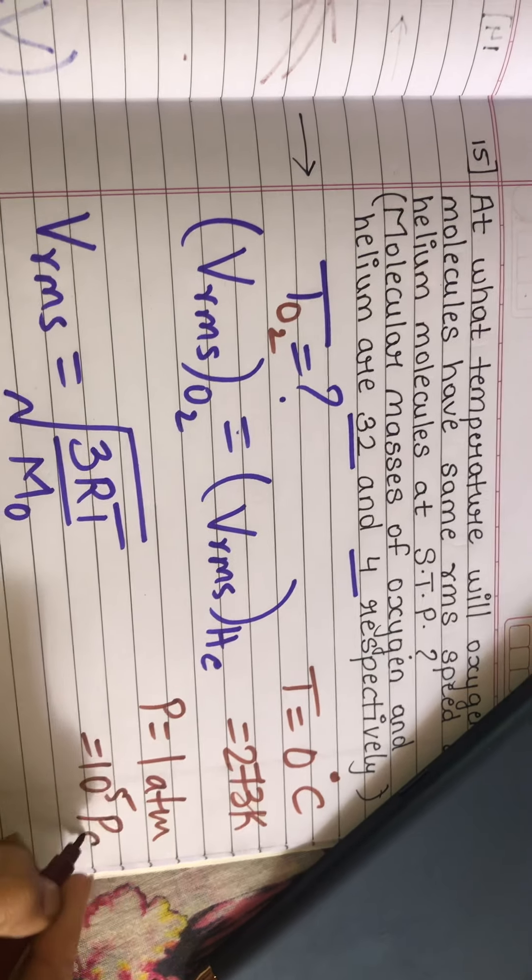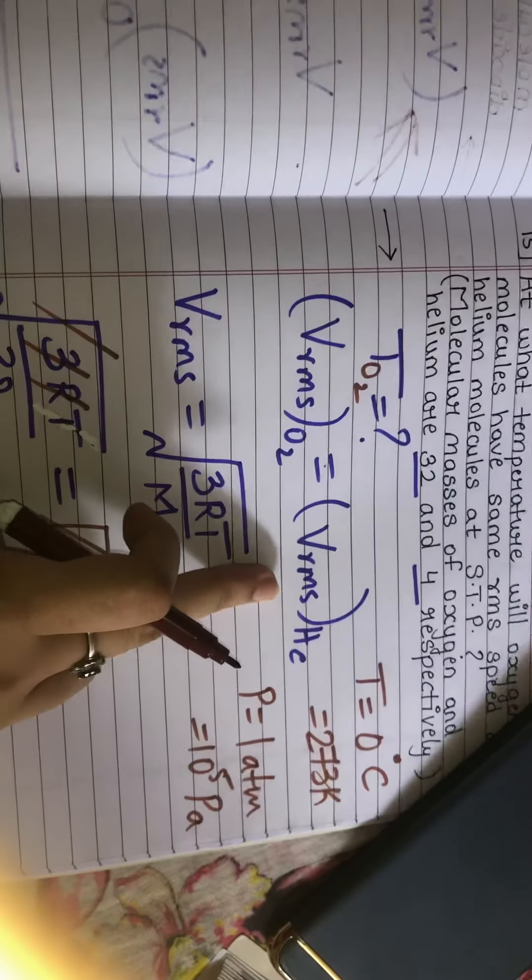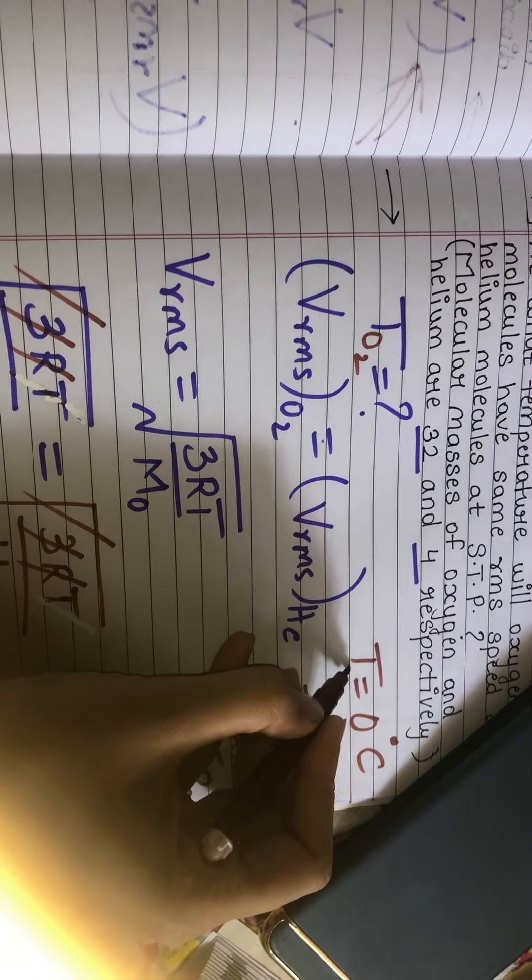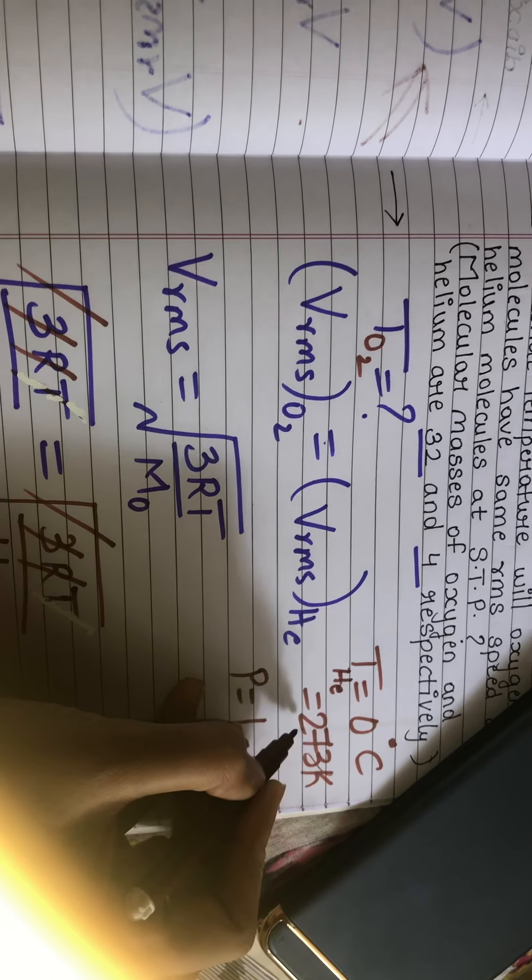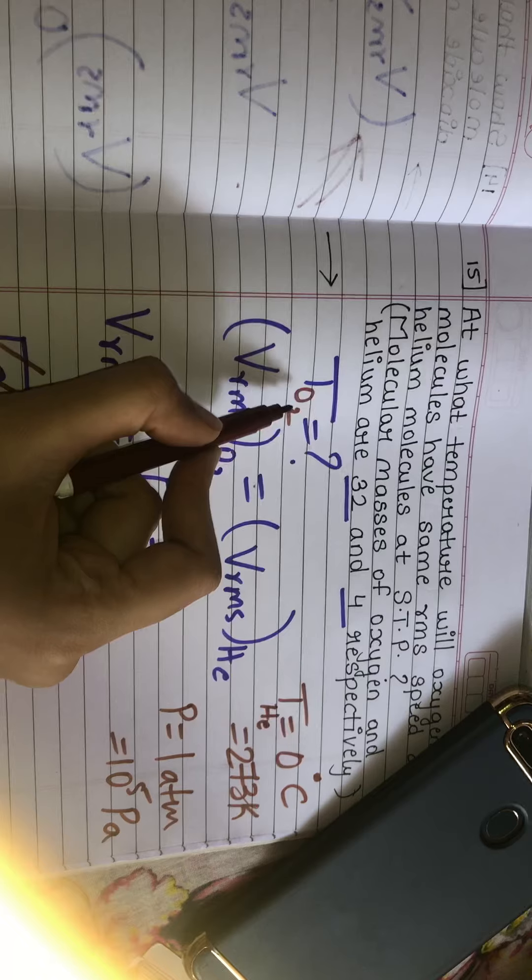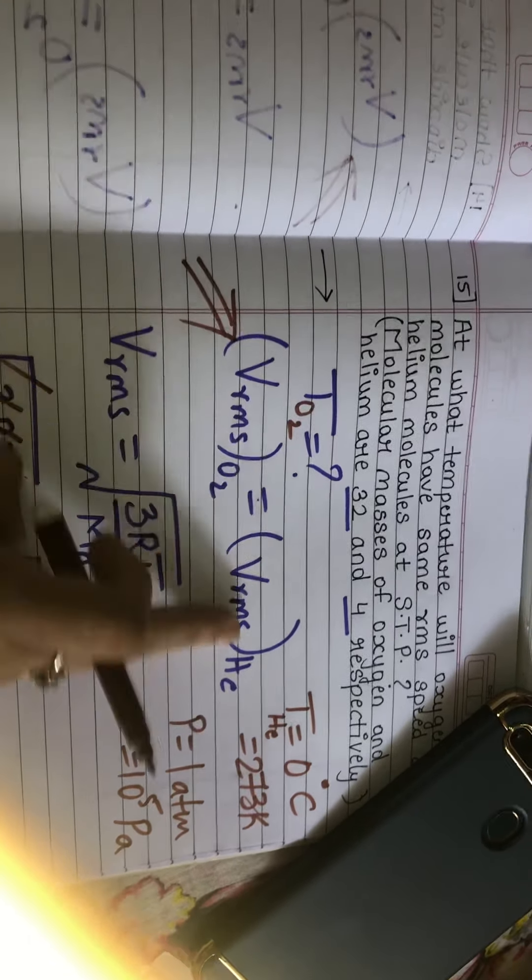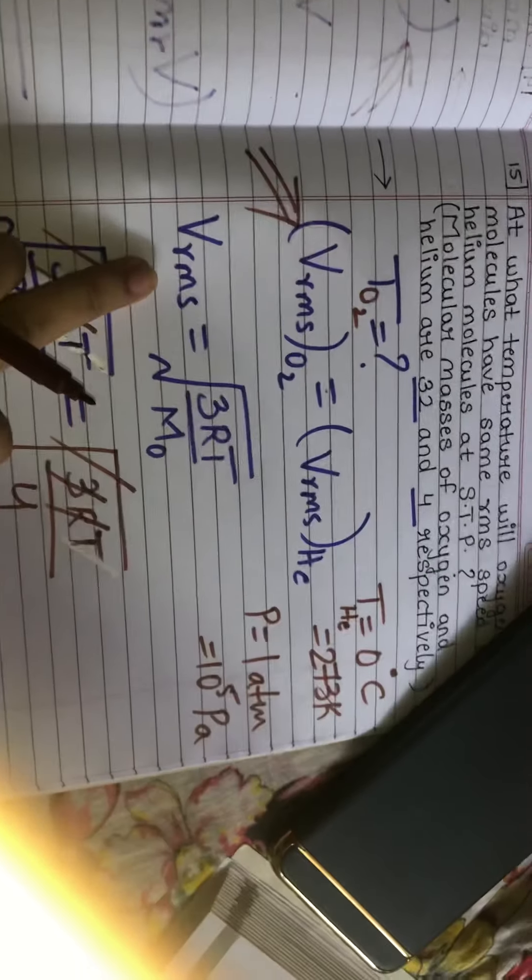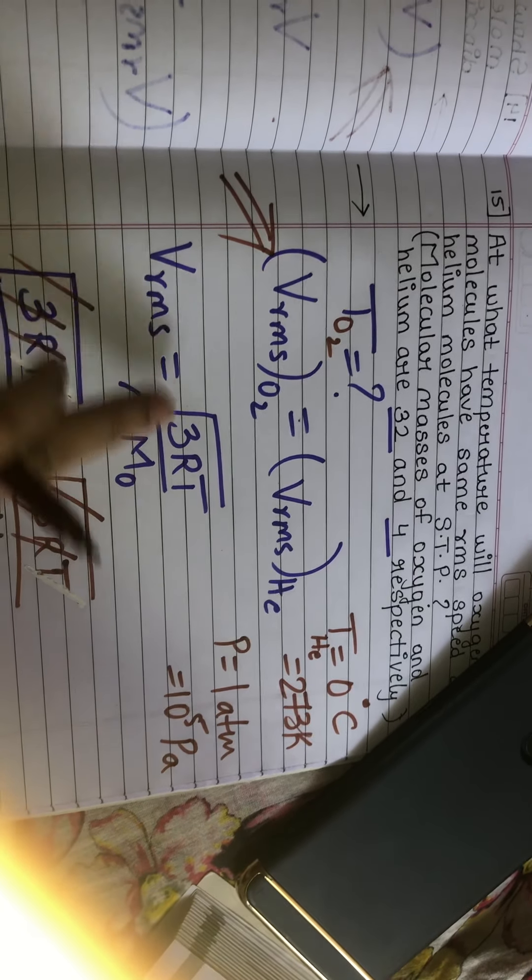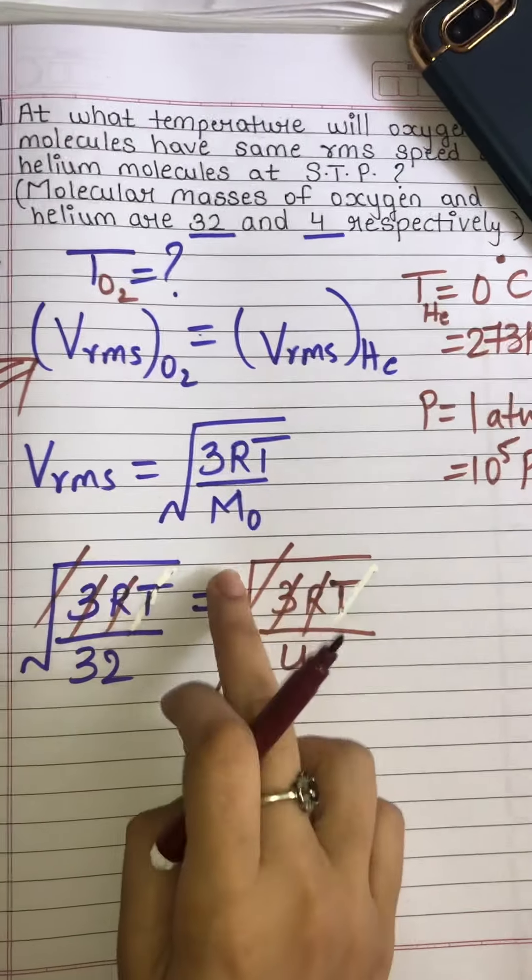For helium the temperature is 273 Kelvin. What is the temperature for oxygen molecules where this condition is valid? We have the formula for root mean square speed: V_RMS equals the square root of 3RT upon M0.